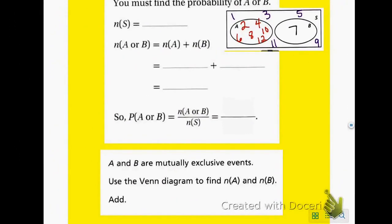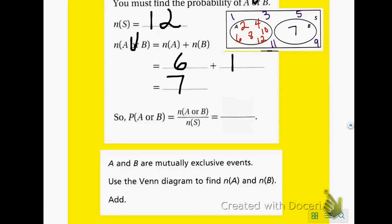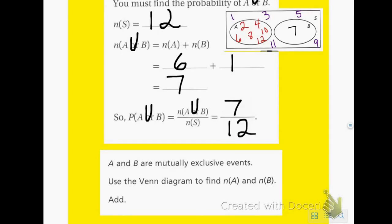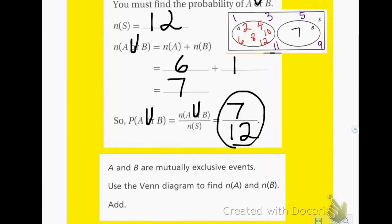Using our Venn diagram, we can find the probability of A or B, which is A union B. The number in the sample space was 12. The number in A was 6, and the number in B was 1. Adding them together gives 7. So the probability of A union B is the number in A or B over the number in the sample space: 7 over 12.